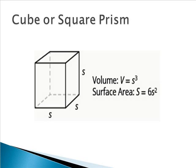The last type of prism we'll discuss is a cube, also called a square prism. A cube has all sides equal. The volume is s³ (side × side × side). The surface area is 6s², because a cube has six identical square faces and the area of each square face is s².